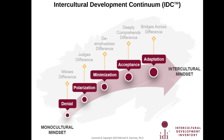In the Defense sub-orientation of Polarization, someone is uncritical toward their own cultural practices and overly critical toward others. They're likely to exhibit a sense of superiority, communicating things like 'we want you to be a part of our society' — as if their society is the one to assimilate to. They over-emphasize mainly negative differences toward other cultures and under-emphasize commonalities, evaluating other cultures against an ideal of 'I am the best.'